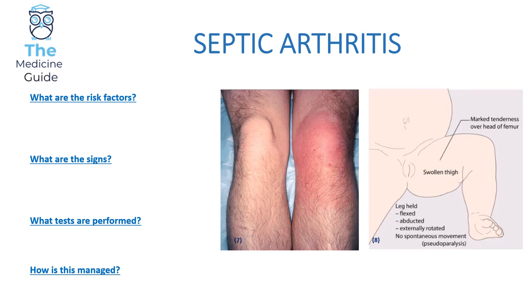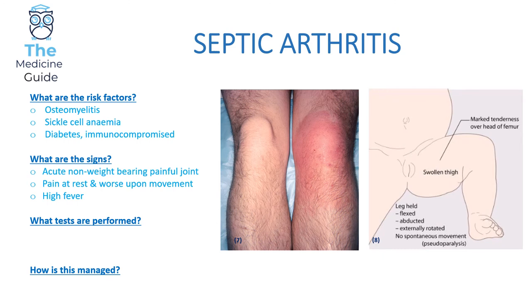Now we're moving on to septic arthritis. Septic arthritis is very, very important — it's a rheumatological emergency and you need to know this inside out for your exams. Risk factors involve osteomyelitis, where infection of the long bone spreads into the joints leading to septic arthritis. Other risk factors include sickle cell anaemia, diabetes, and an immunocompromised patient.